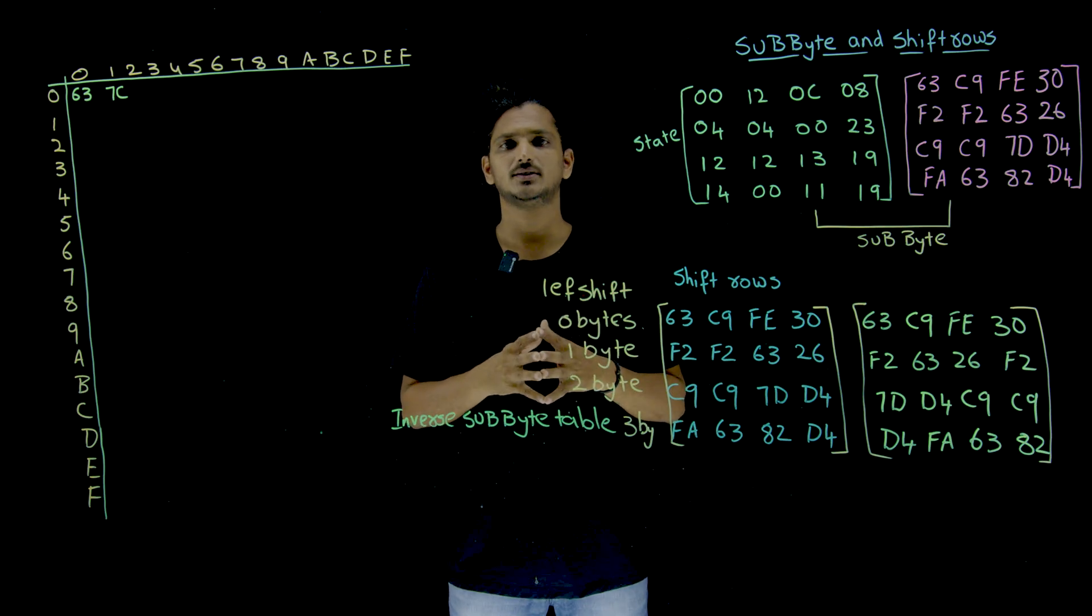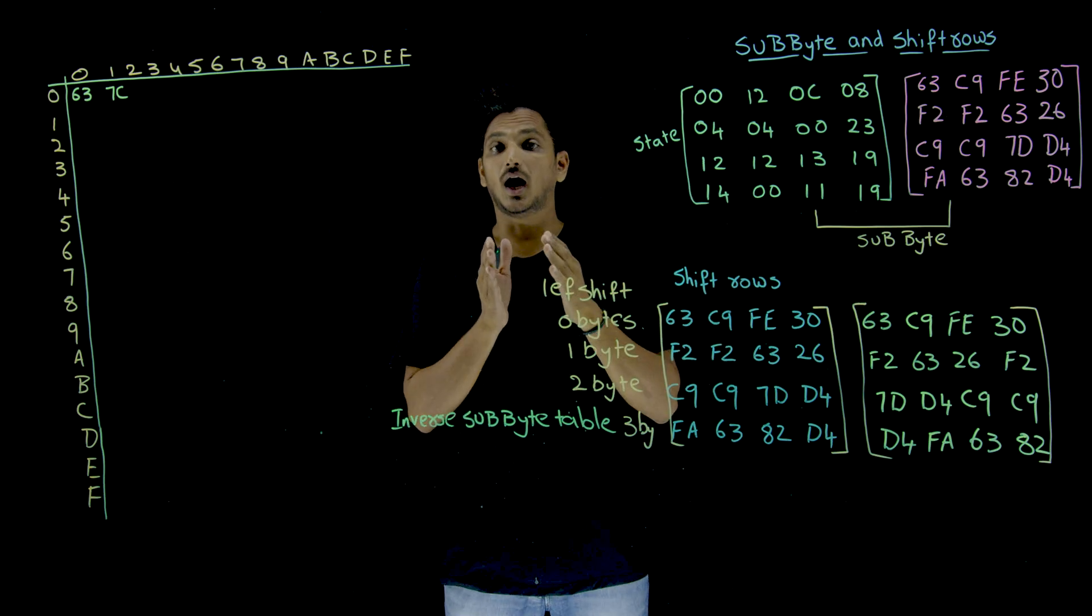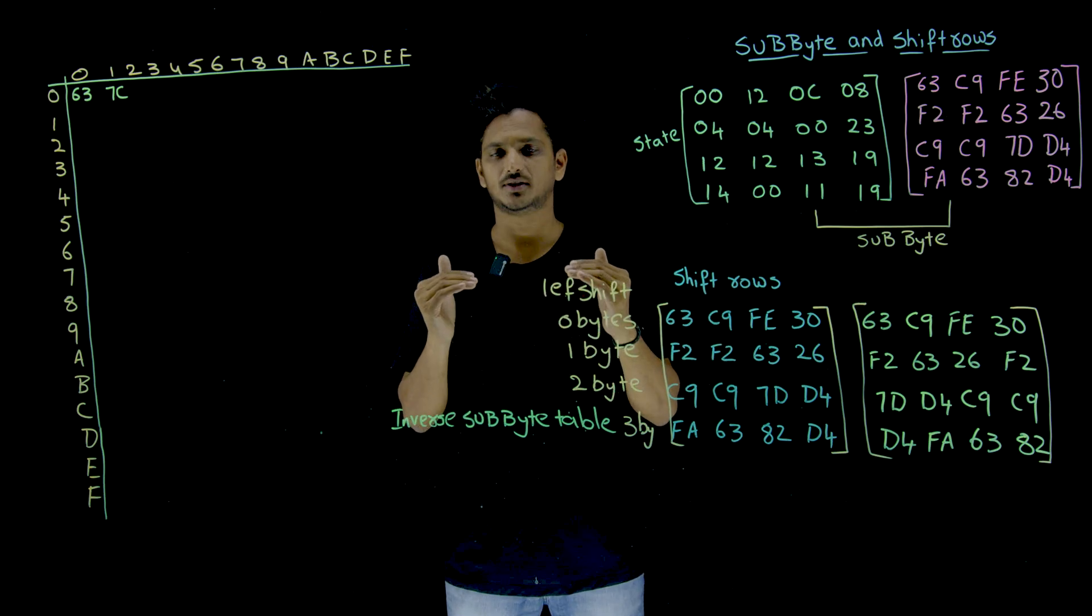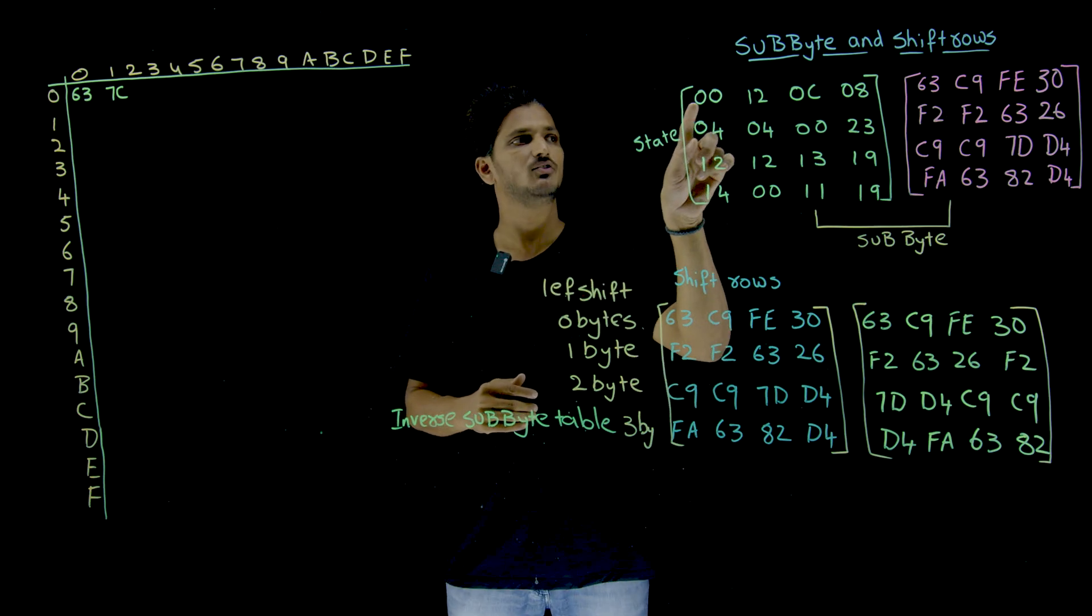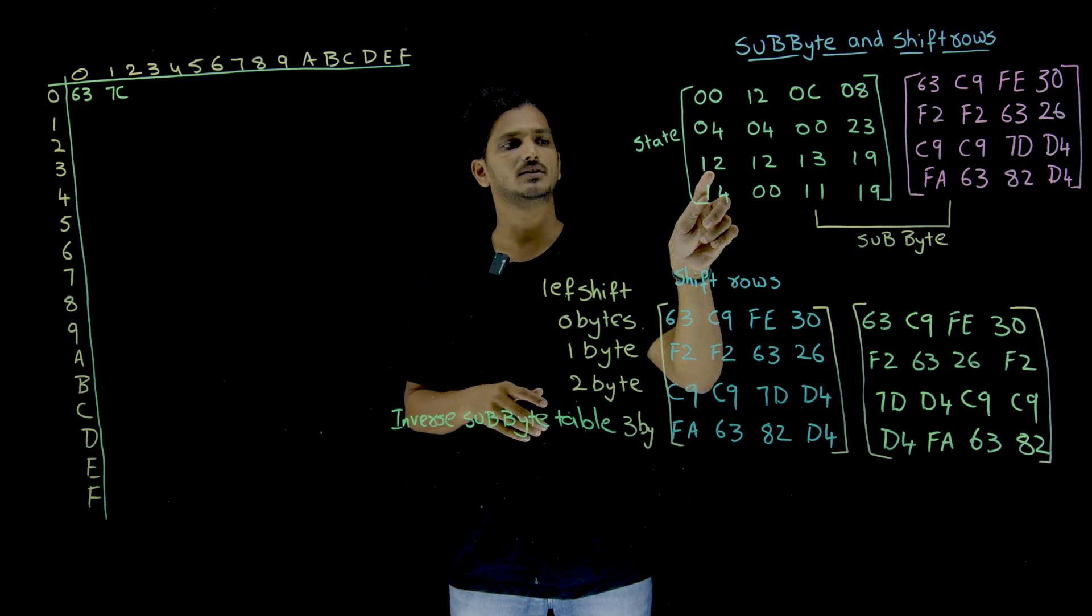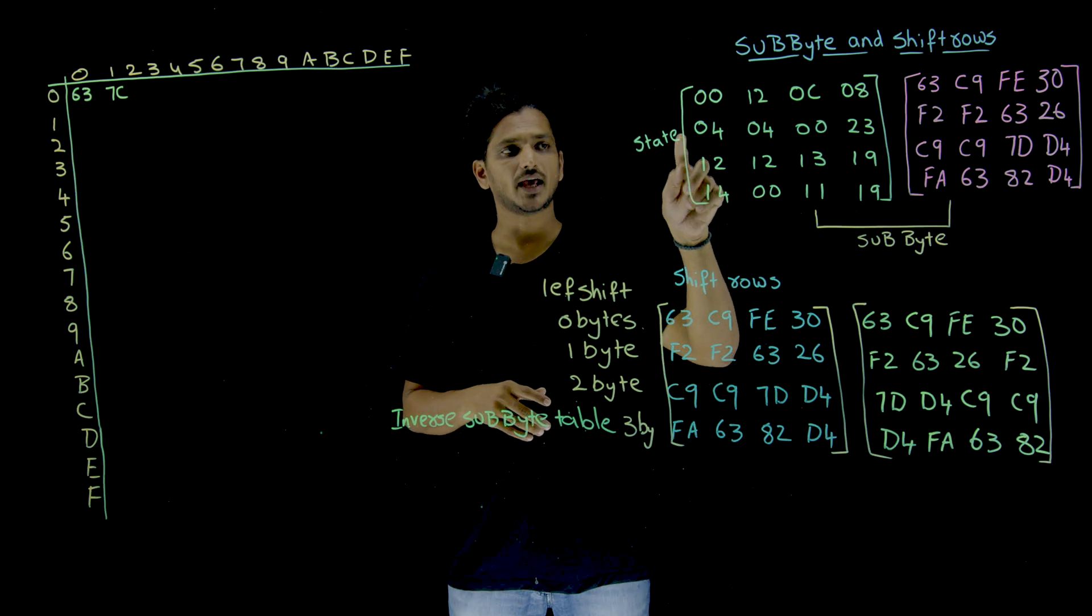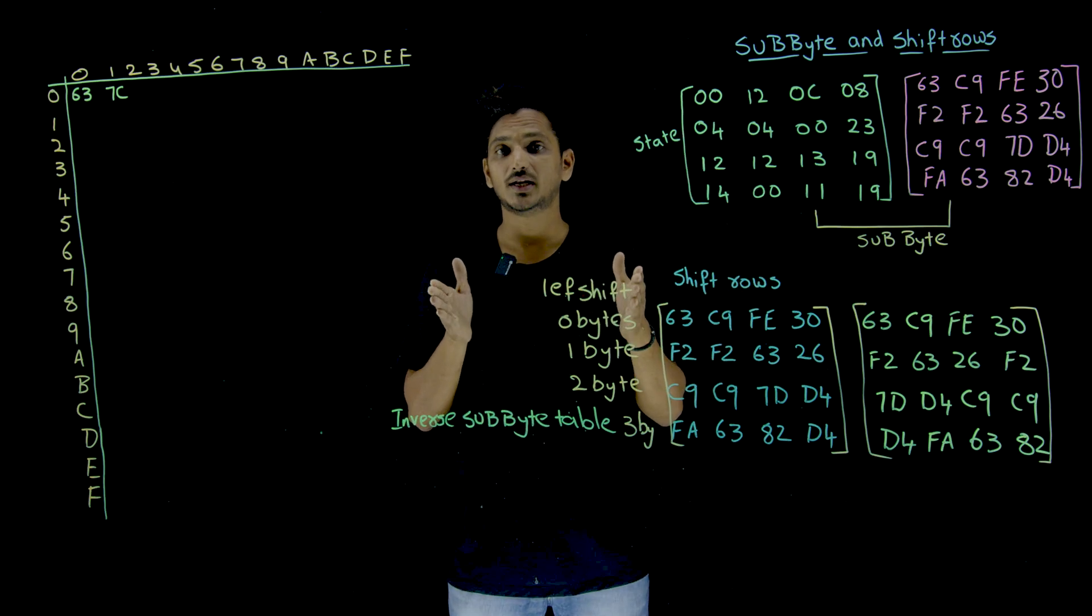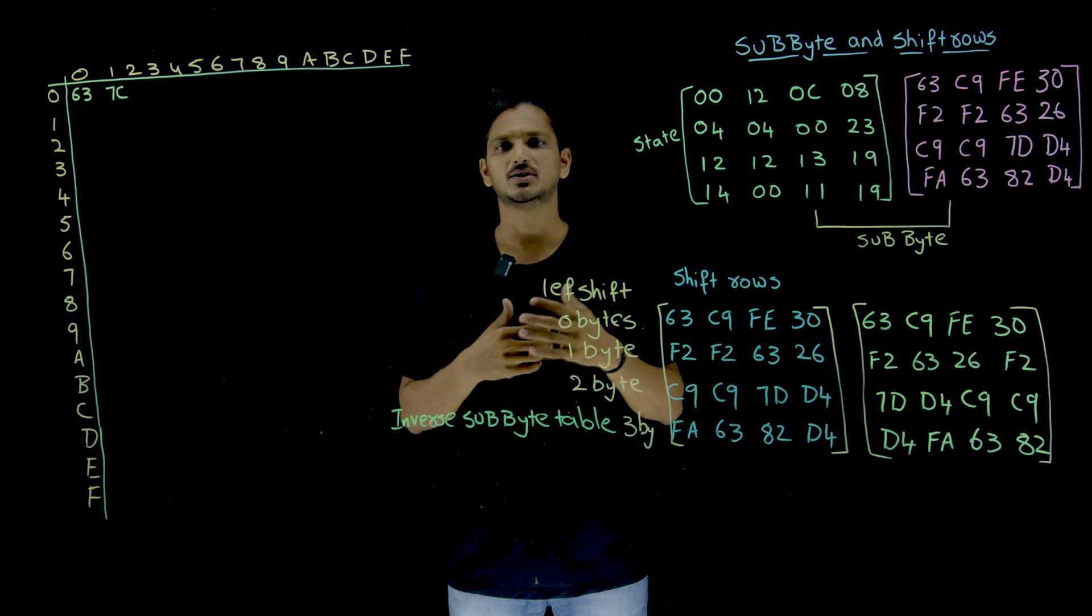Now coming to today's class, in our last class we discussed that we are having 128-bit plain text. That plain text is converted into a state. State will be in the form of matrix: first byte, second byte, third byte, fourth byte, fifth byte, sixth byte, seventh byte, eighth byte. Like this we are going to store our data, 128-bit plain text, in the form of matrix, means two-dimensional array.